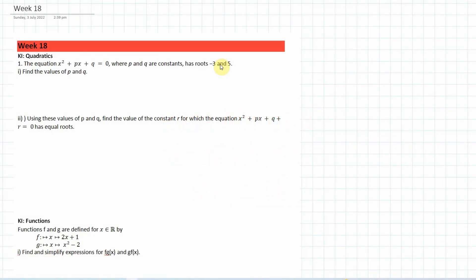Week 18 of Pure Maths 1 maintenance. First question: we have the equation x² + px + q = 0, where p and q are constants, with roots -3 and 5. That means we have factors (x + 3) and (x - 5). Expanding gives x² - 2x - 15, therefore p = -2 and q = -15.